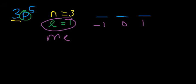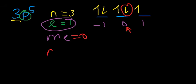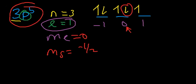We're focused on the fifth electron. The fifth electron lands in the orbital where ML is zero. MS is negative one half because the fifth arrow points down — you always start by drawing the arrows up and then down. So those are the four quantum numbers that correspond to the 3P5 electron.